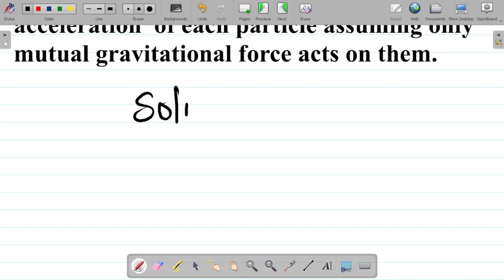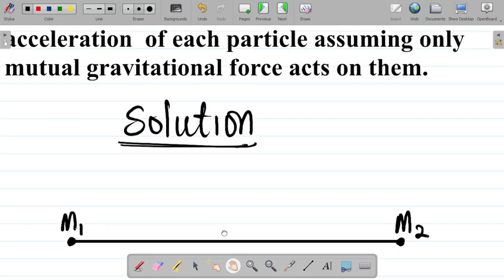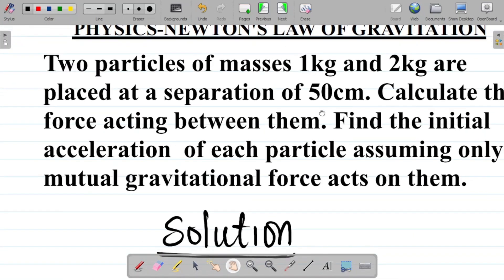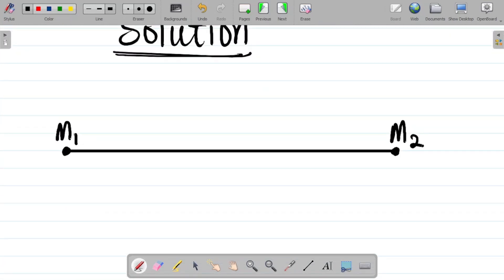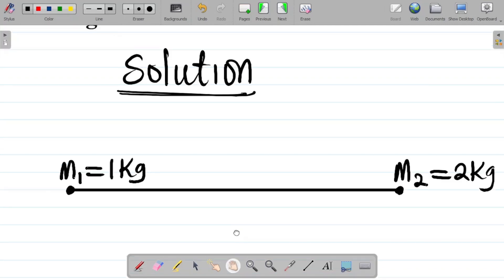So solution. First things first, I'll just have my diagram here. We said two particles here, this one here and then this one here. We'll call the first particle M1, the second one M2. Let's take M1 as one kilogram and M2 as two kilogram. So M1 is equal to 1 kg, M2 is equal to 2 kg.